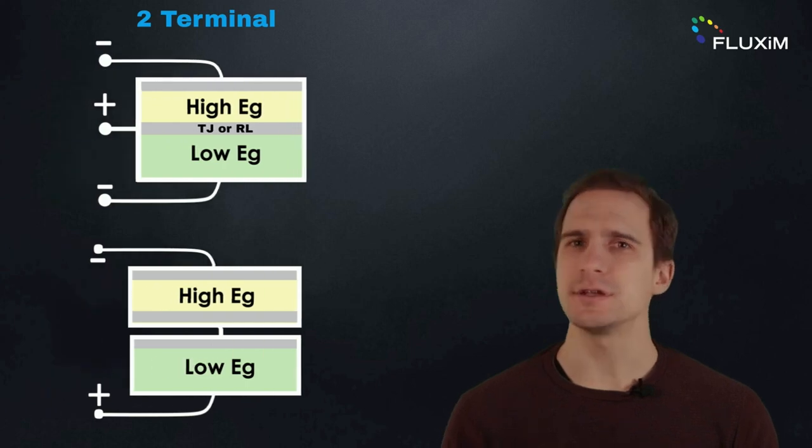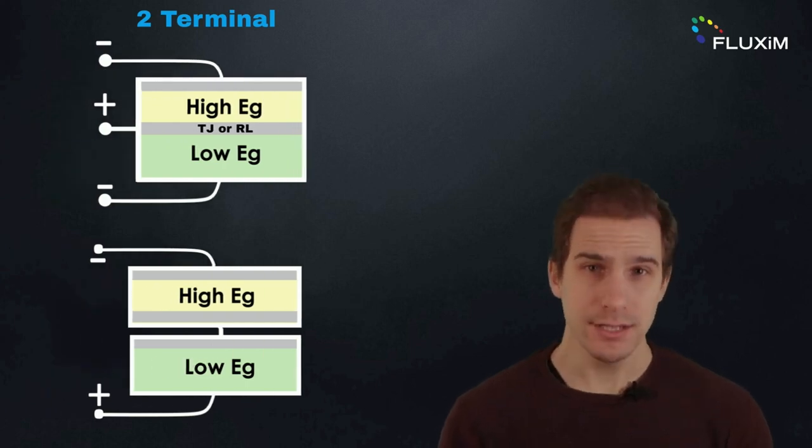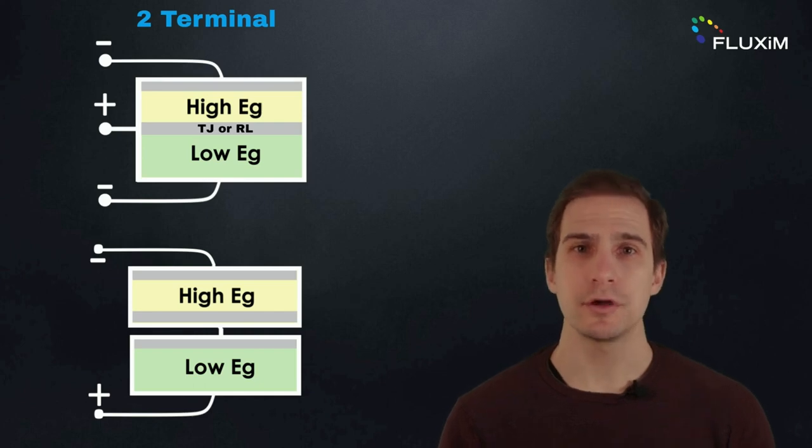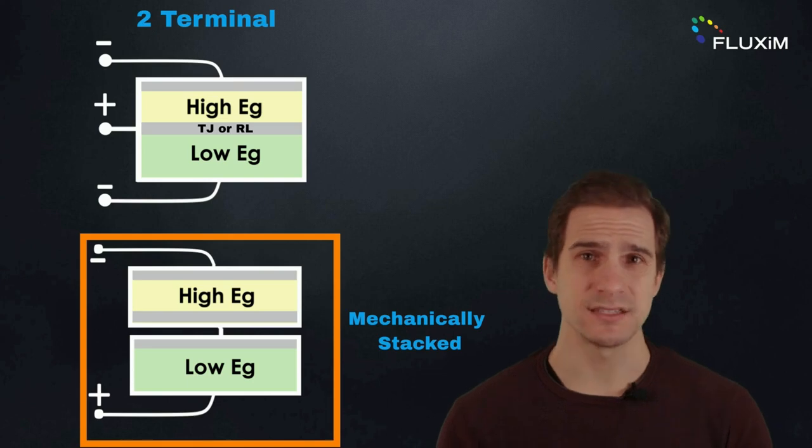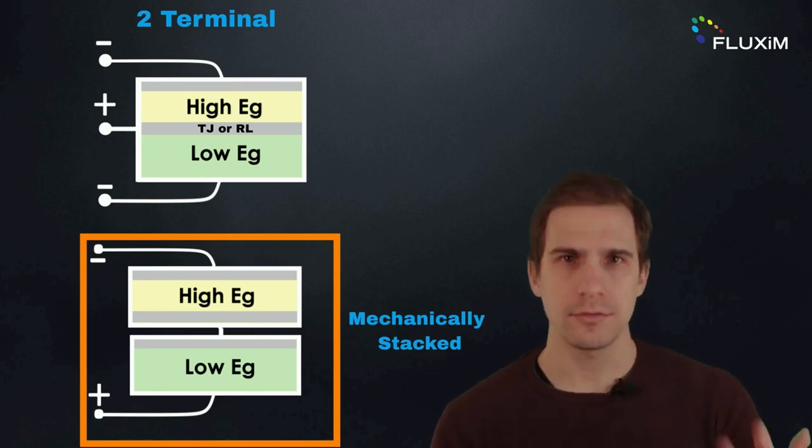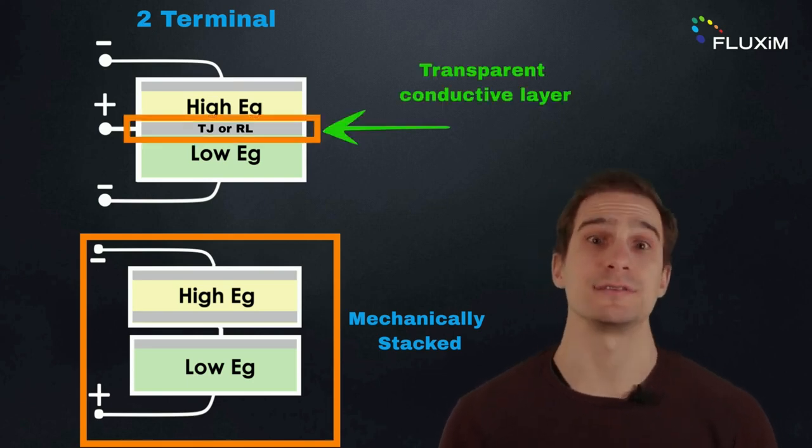In two-terminal tandem solar cells, the subcells are electrically connected and must be current matched to avoid recombination losses. This configuration is obtained by stacking the subcells mechanically or through a single transparent conducting layer.